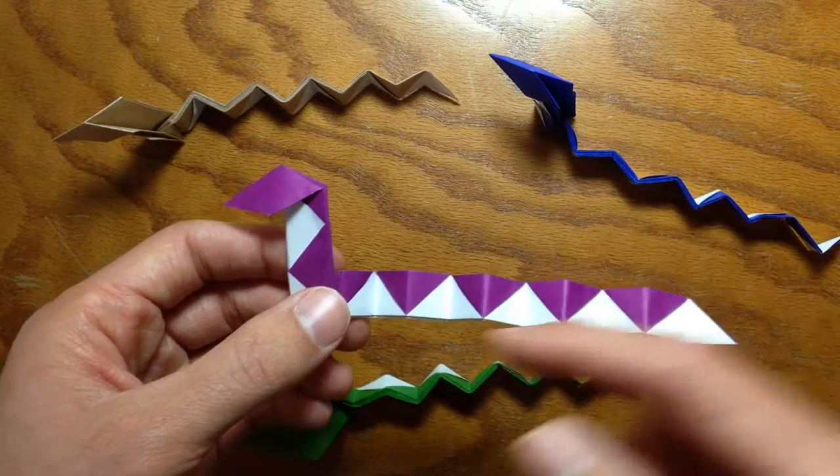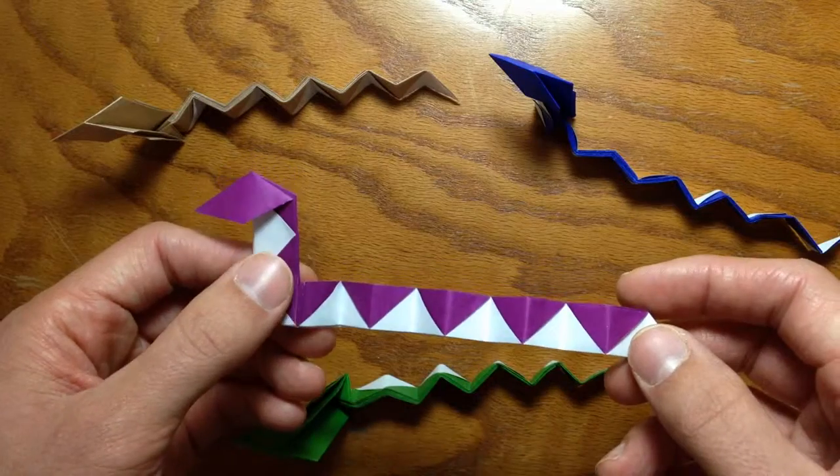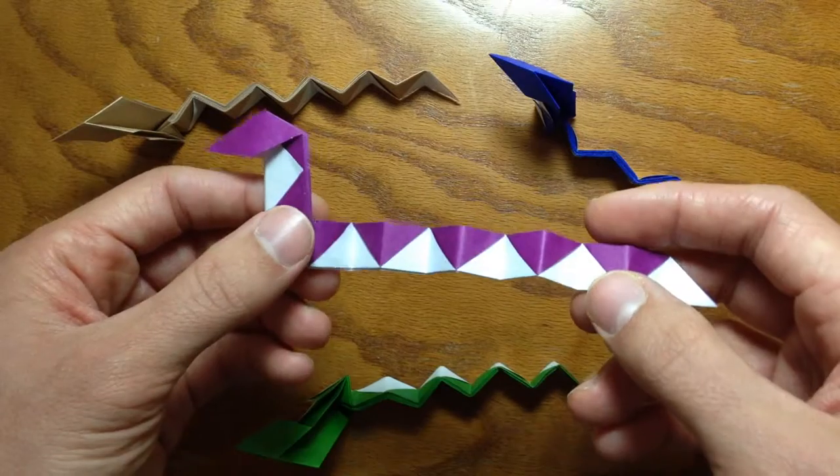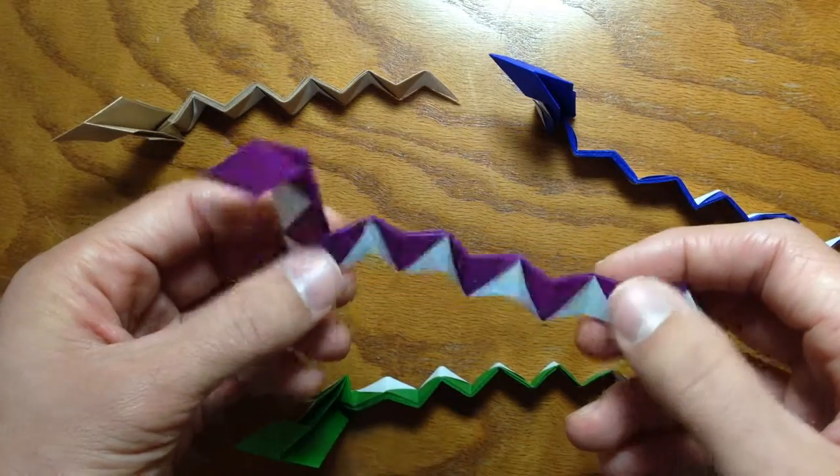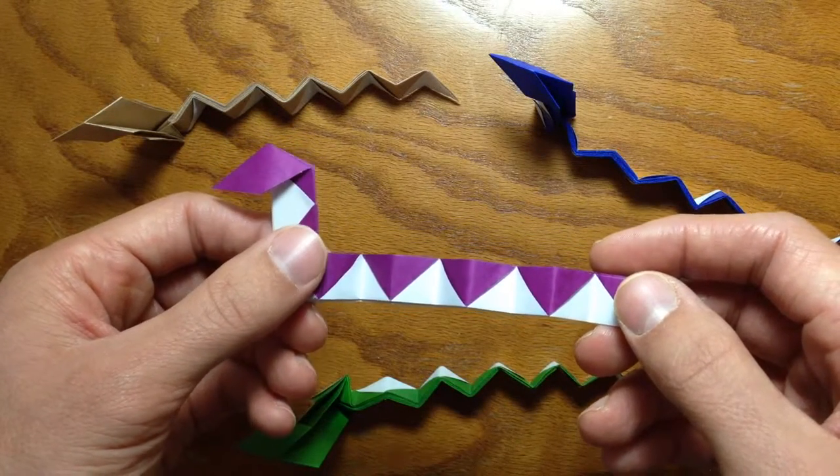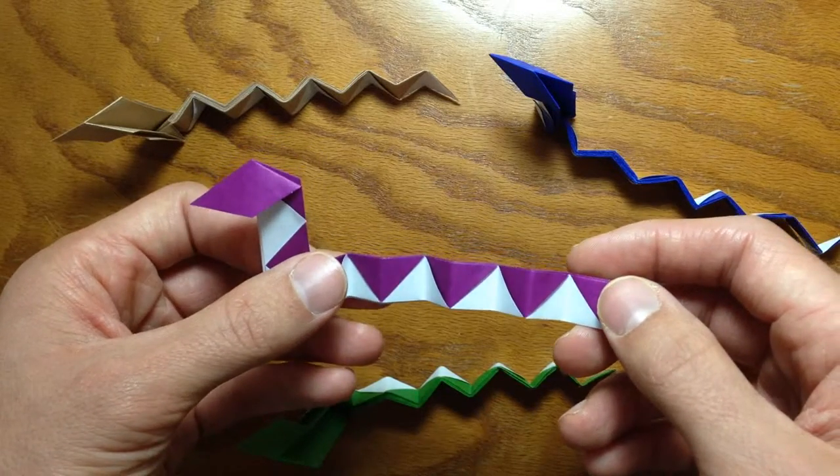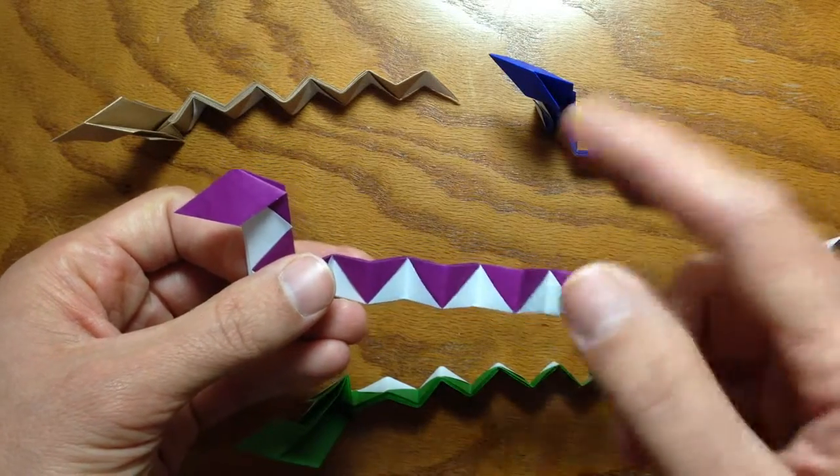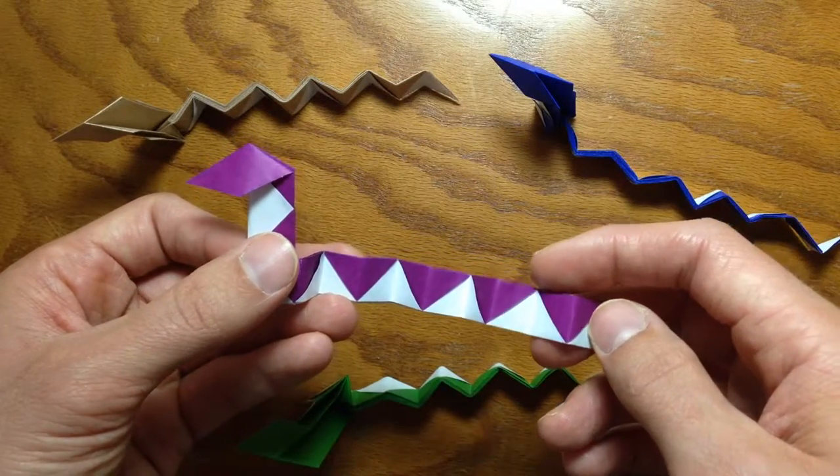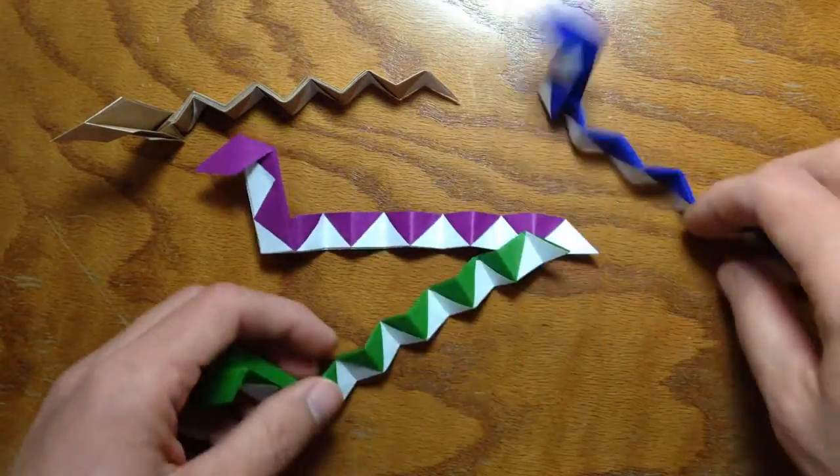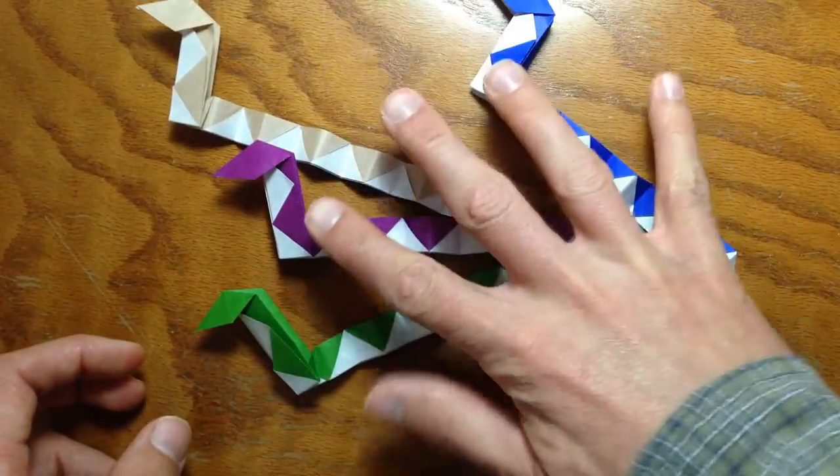And you see both sides of the paper are going to be showing in this model. So pick a color you like, or if you happen to have a paper with two colors, one on each side, that might be a good paper to use for this model. Anyway, let's go ahead and get started.